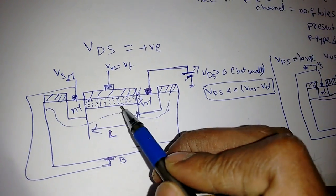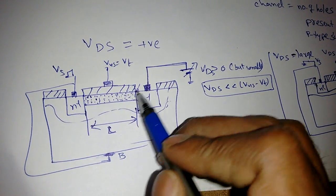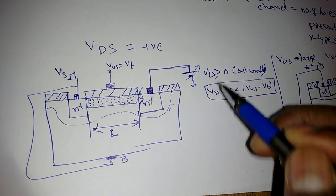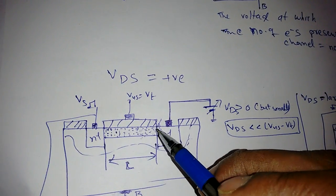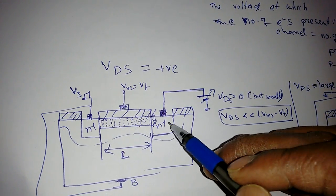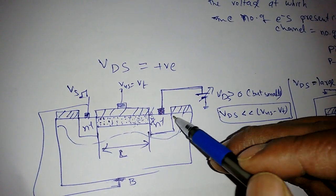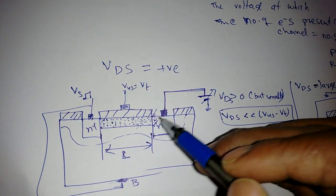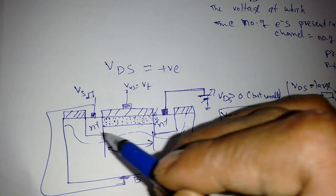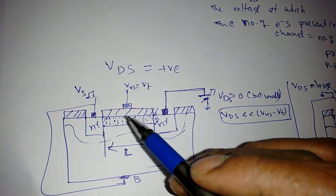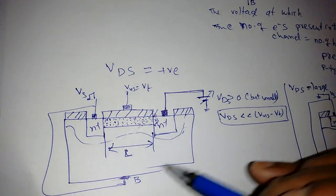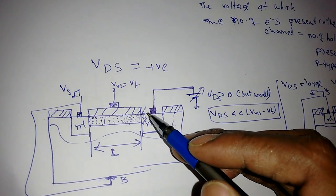Once the channel is formed, unless we apply some voltage at the drain, the electrons will not move and no current flows. If we apply a small voltage VDS greater than zero, it attracts the electrons present in the channel. The electron distribution is uniform, and when positive voltage is applied it attracts electrons from the channel continuously. Since VS is always grounded, electrons flow from lower potential to higher potential — from source to drain — and current flows.